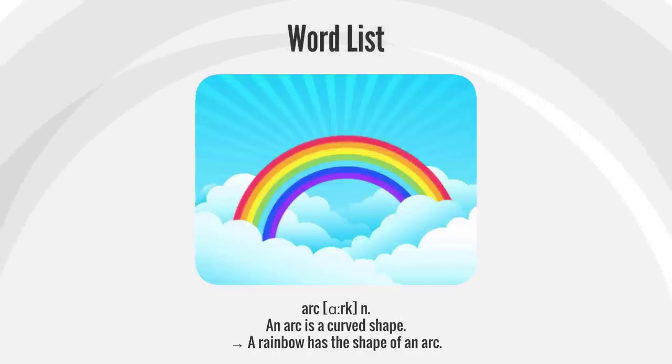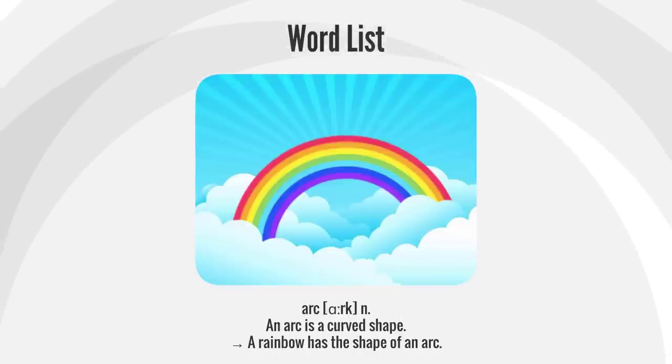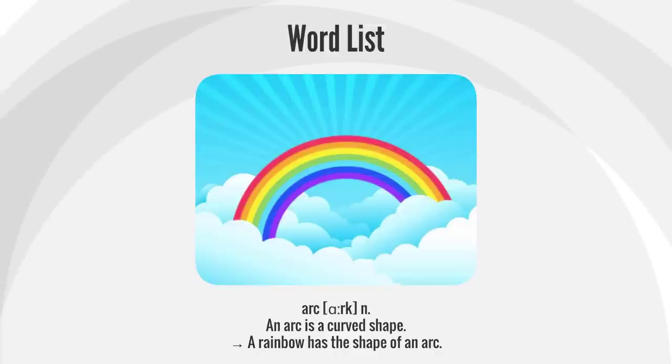Arc. An arc is a curved shape. A rainbow has the shape of an arc.